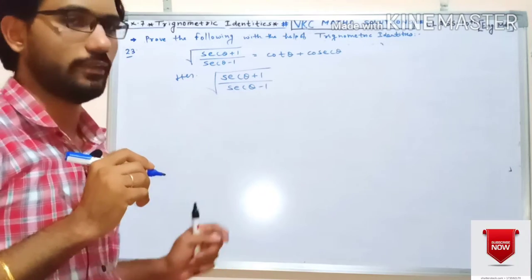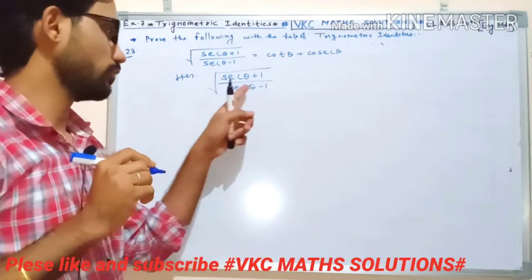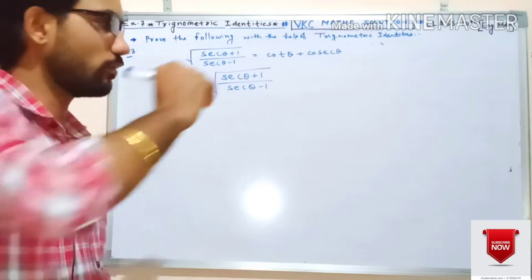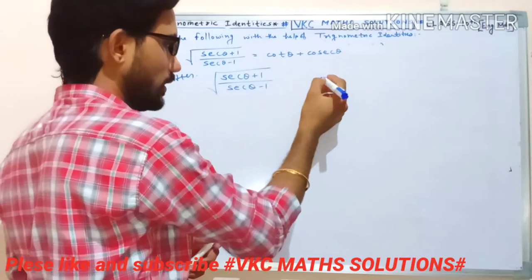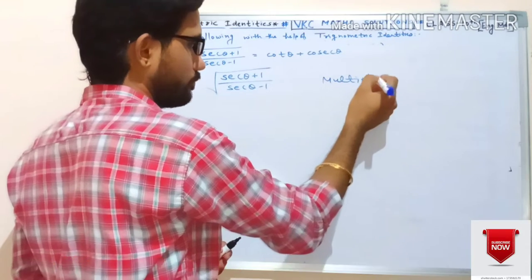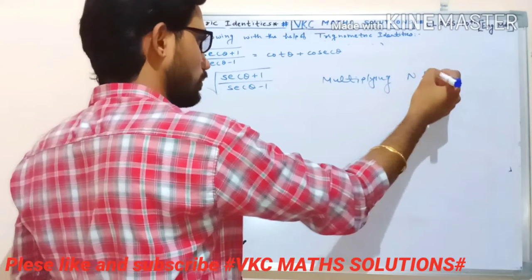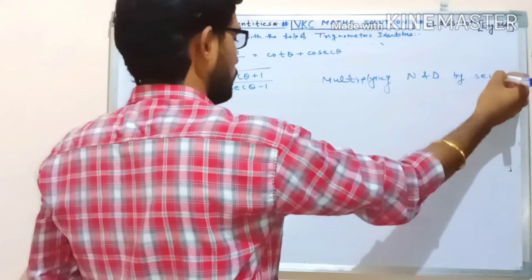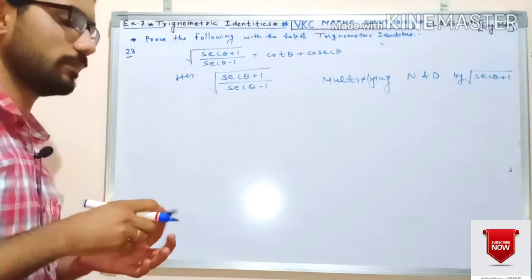Since the denominator is secθ − 1, we need to multiply by secθ + 1 — that is its conjugate. The denominator is negative, so its conjugate is positive. To remove the irrational term, we multiply numerator and denominator by √(secθ + 1).